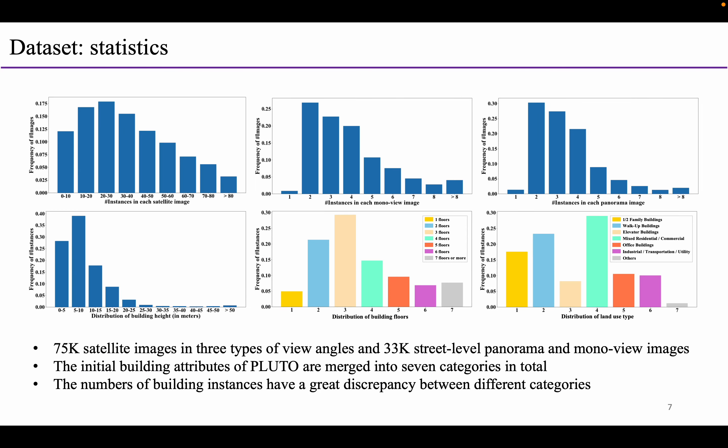The whole dataset contains around 75,000 satellite images in three types of view angles, as well as 33,000 street-level panorama and mono-view images. In addition, the initial building attributes of Pluto are merged into seven categories in total, and the number of building instances has a great discrepancy between different categories.